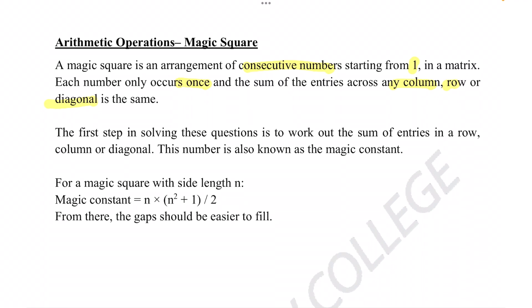The first step in solving these questions is to work out the sum of entries in a row, column or diagonal. This number is also known as the magic constant.